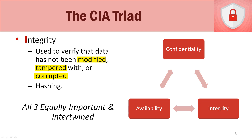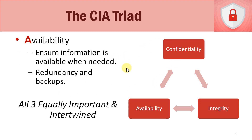Now let's talk about the last pillar of the CIA triad: availability. Availability means we want to make sure that our information, data, and everything on our network and IT infrastructure is available when it's needed. For example, if you're a financial institution like a bank with people accessing your systems 24/7 worldwide, you need to be up 100% of the time. But if you're a small business operating only from 8 a.m. to 5 p.m., your availability only needs to cover those working hours.